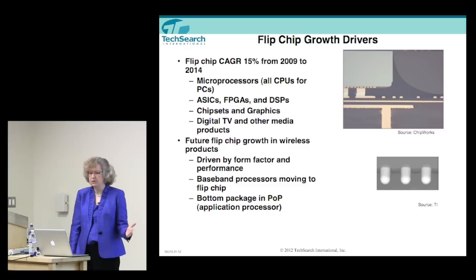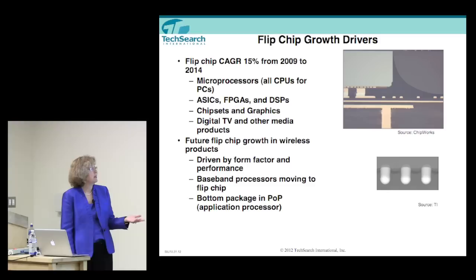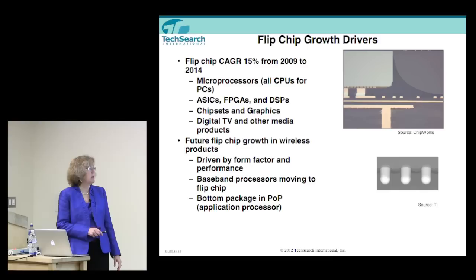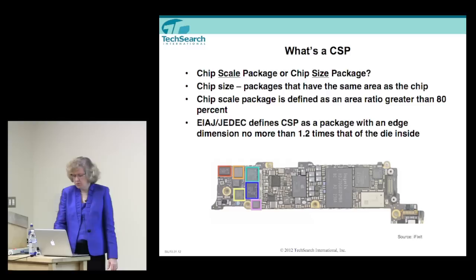Some of the drivers for growth in flip chip technology are very high-performance products: ASICs, field programmable gate arrays, DSPs, chipsets, graphics, digital TV, and other media products. A lot of wireless products are driven by form factor and performance, with many baseband processors moving to flip chip. I'll also talk about package on package (PoP), where an application processor is moving to flip chip in that configuration.